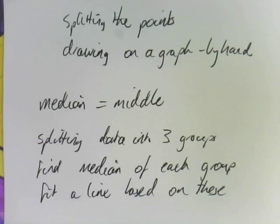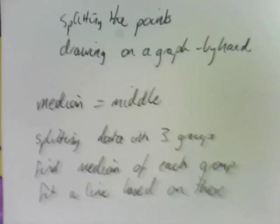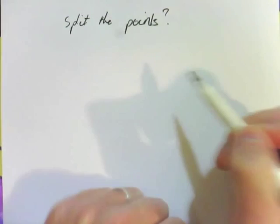So that's what this whole idea is. We're going to split the points into 3 groups, find the median of each group, and then fit a line based on the medians. Of course, we're going to start with this on the graphs, and I'm going to talk to you about splitting points. So how do we do it?